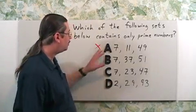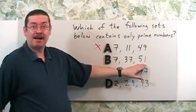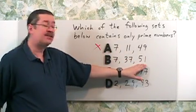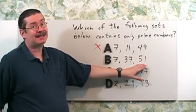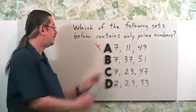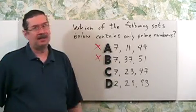For example, over here, 51. If you add up the digits, 5 plus 1, that's 6. 6 is divisible by 3. So I know B cannot be the answer either.